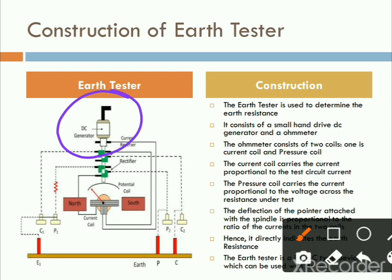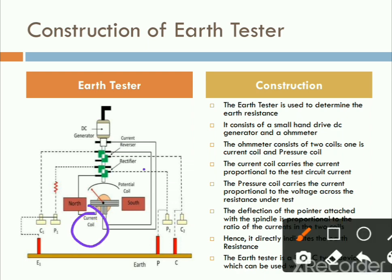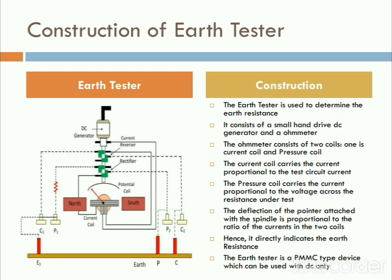The ohmmeter consists of two coils: one is the current coil and the second is the pressure coil. The current coil carries the current proportional to the test circuit current.